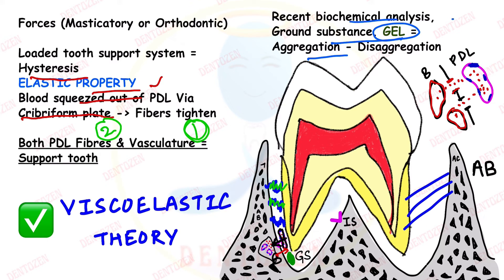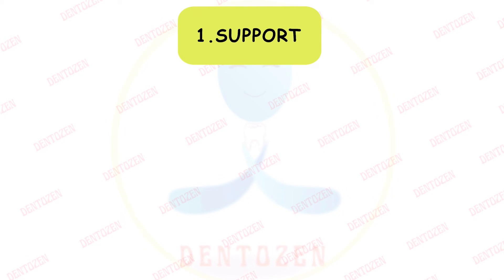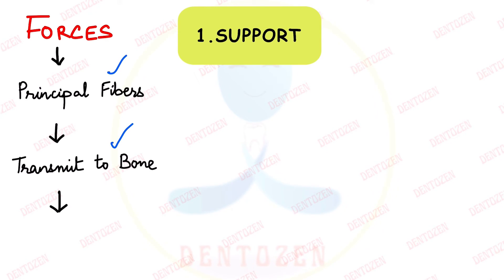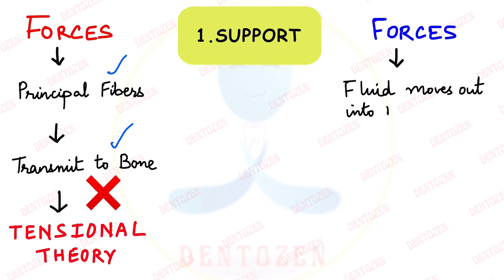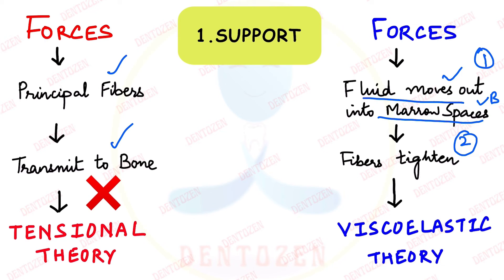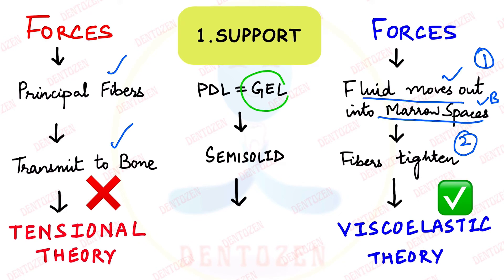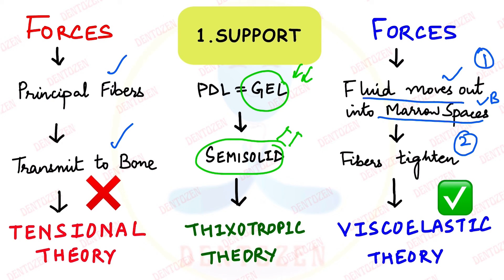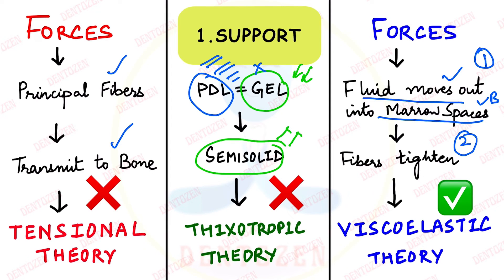This theory is called the viscoelastic theory. Recent biochemical analysis has revealed that the ground substance — a gel in the PDL — can also show aggregation and disaggregation, which can help support the tooth during function. So the support function of the PDL can be explained by three theories: first, the tensional theory — not accepted; second, the viscoelastic theory — accepted, where fluid movement from blood spaces to marrow spaces is primary and fibers are secondary; third, the thixotropic theory — not accepted, because the PDL is not a gel but has principal fibers.